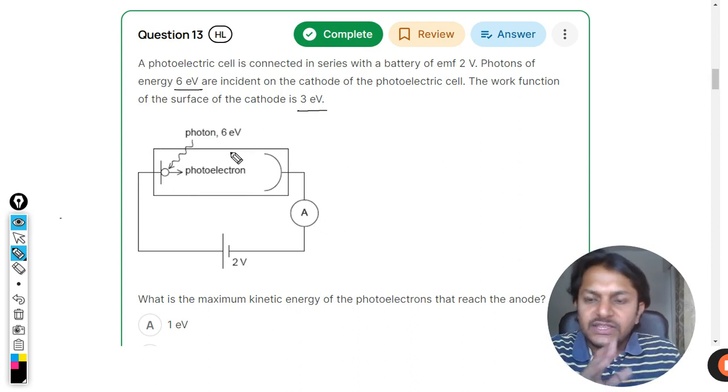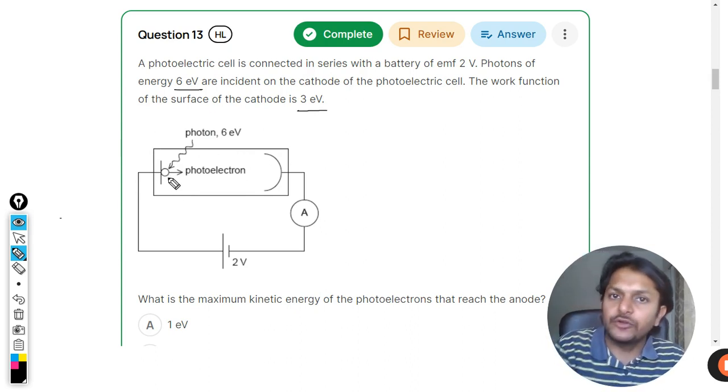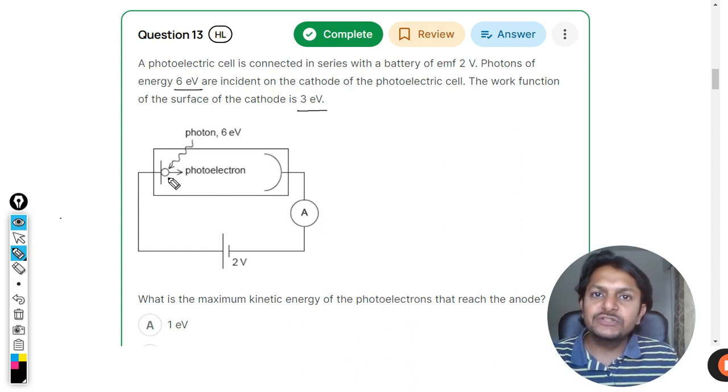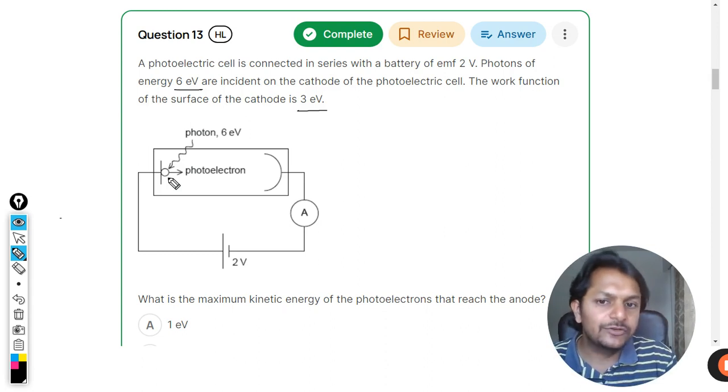So one thing is clear: the photoelectrons which would be coming out, the maximum possible kinetic energy that the electrons can have will be 6 minus 3, that is 3 electron volts.